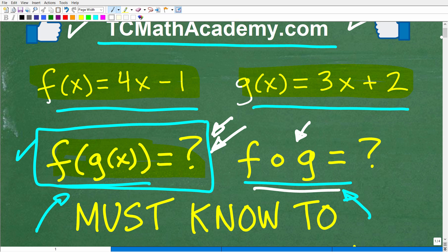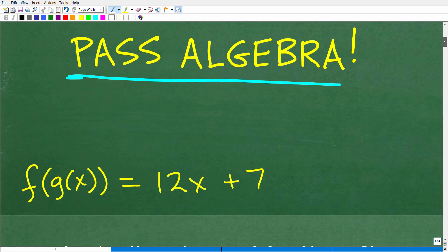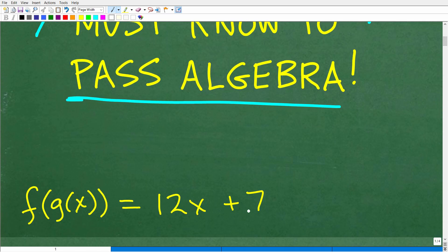So given these two functions, f of g of x, and this of course would be considered a composite function, is what? Well, f of g of x is equal to 12x plus 7 in this example.